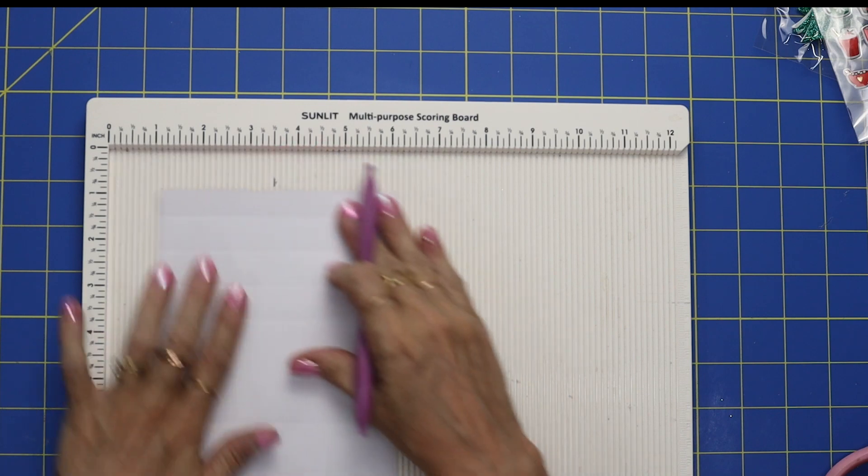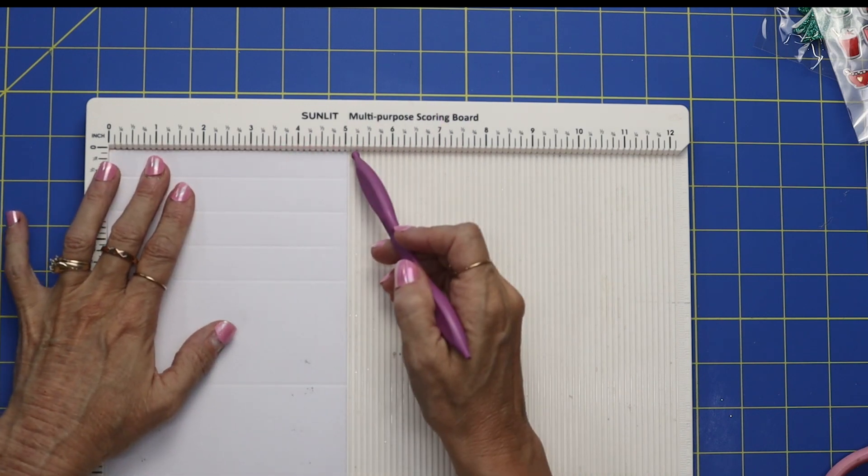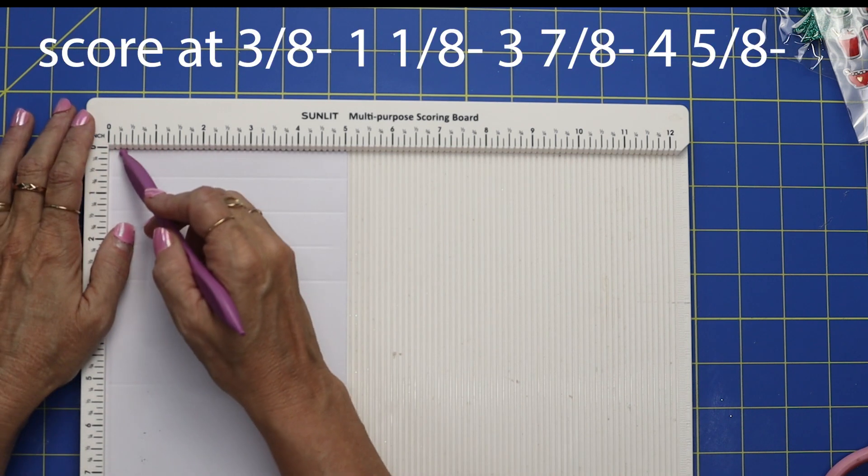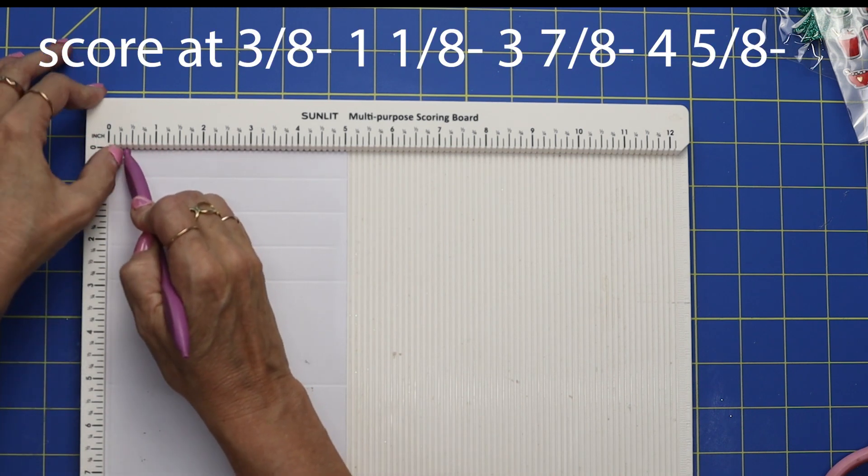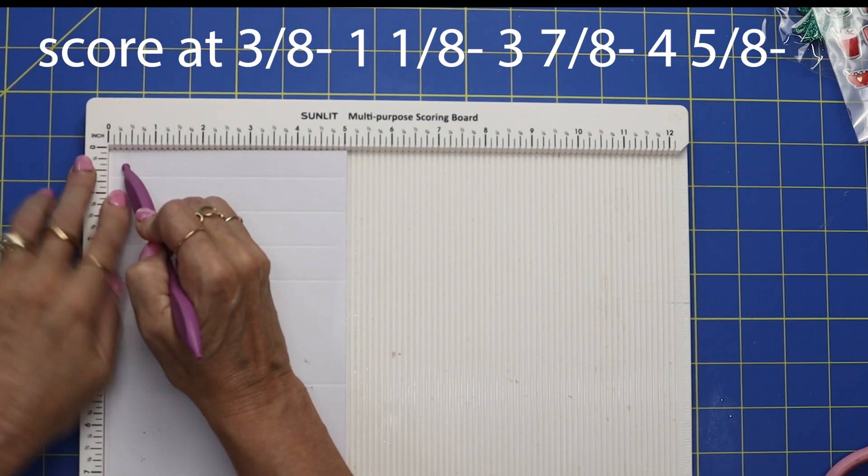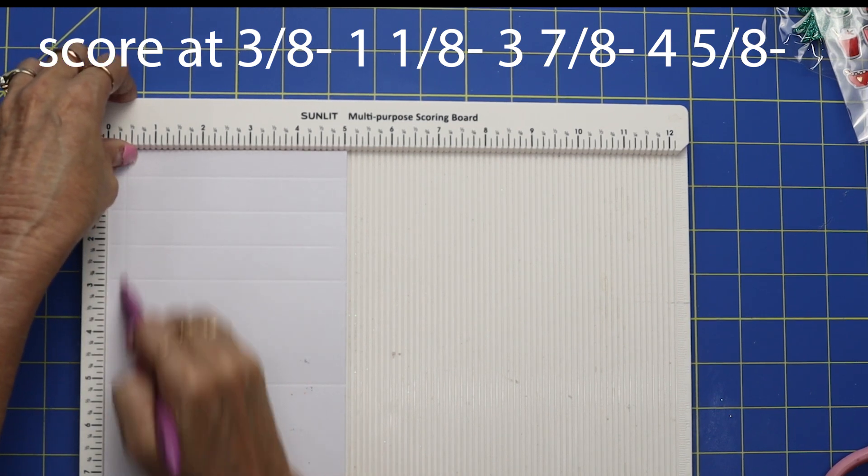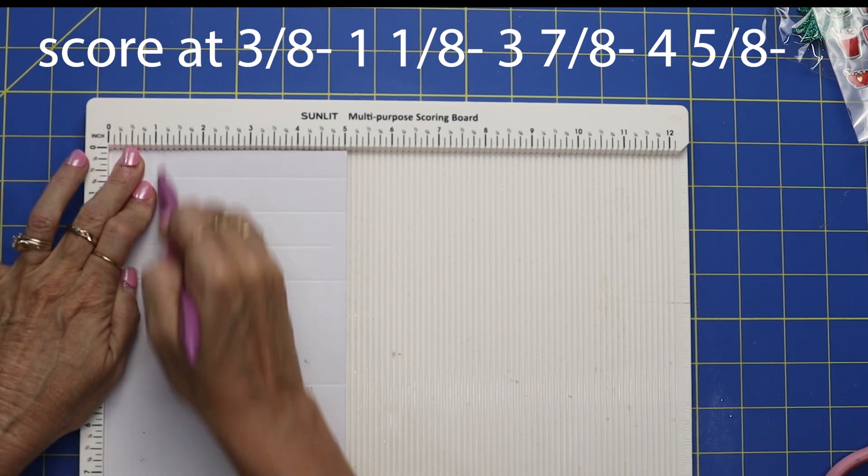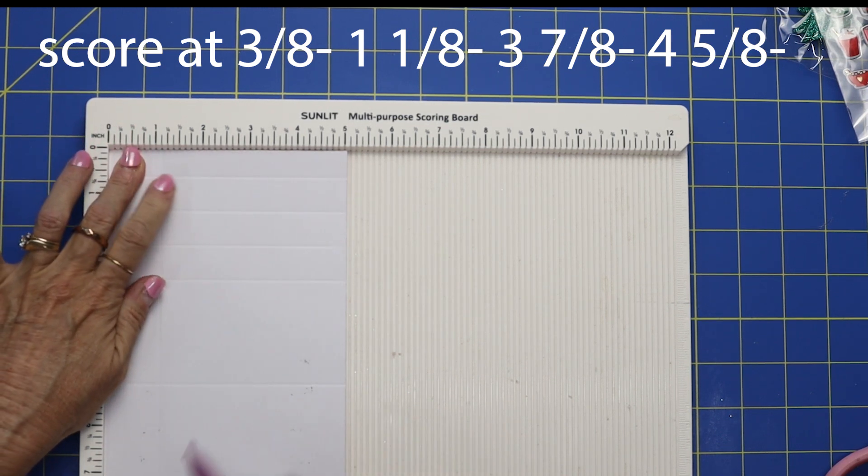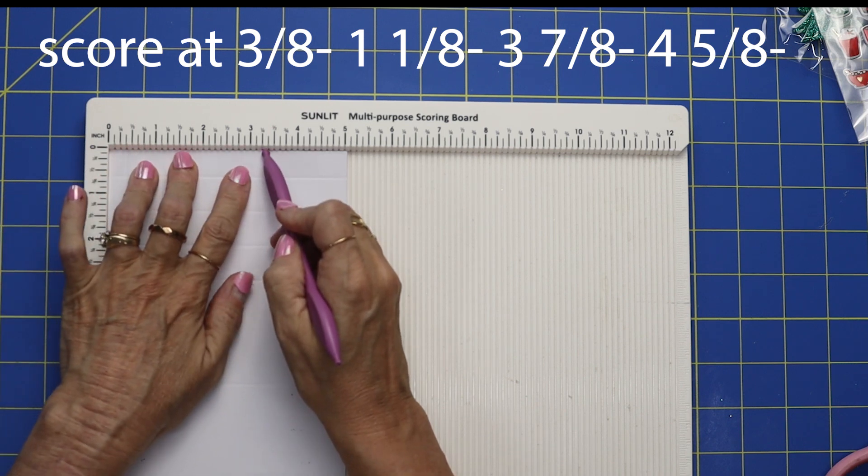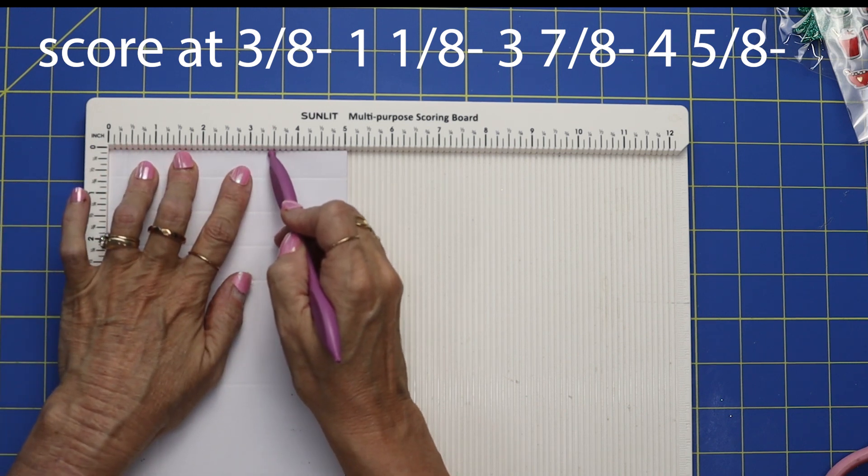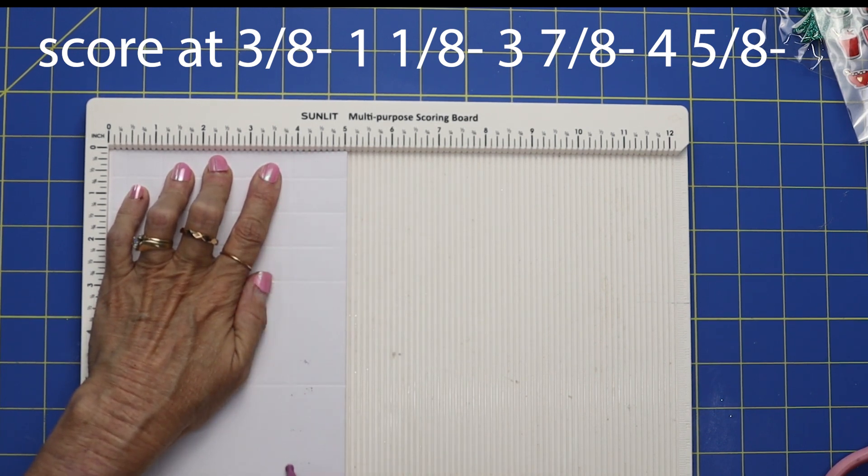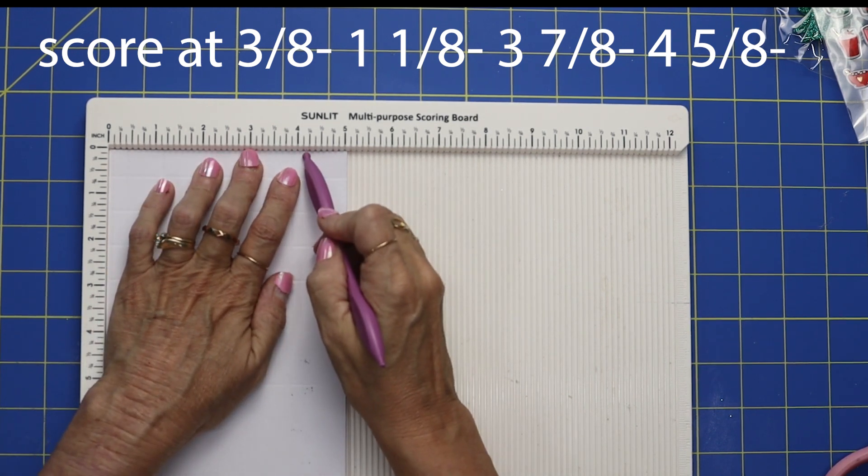Now go ahead and flip your paper to the five inch side and you want to score at three eighths, at one and an eighth, at three and seven eighths, and at four and five eighths.